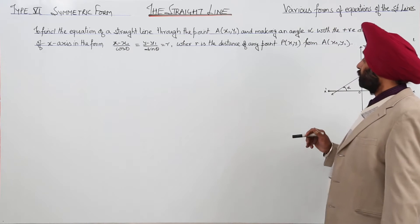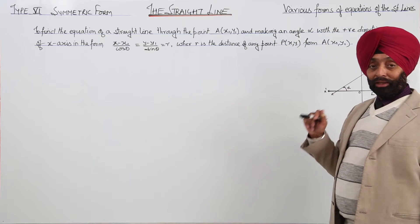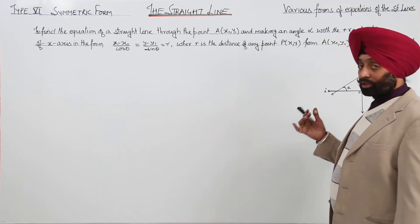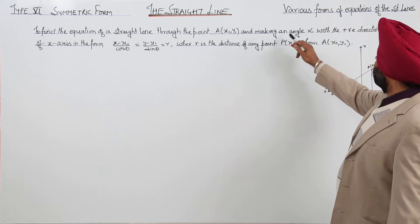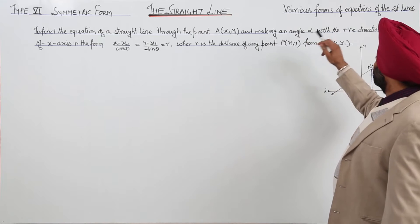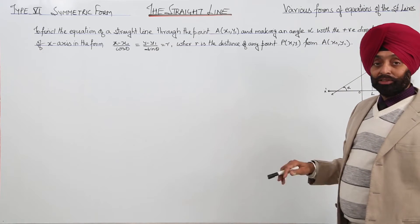To find the equation of a straight line through the point capital A with coordinates x1, y1, and making an angle alpha with the positive direction of x-axis in the form.